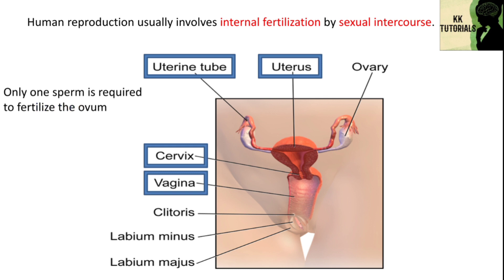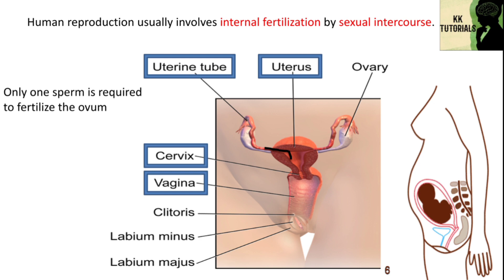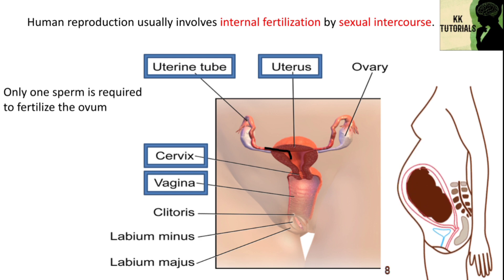Upon successful fertilization, the fertilized ovum or zygote travels out of the fallopian tube and into the uterus, where it implants in the uterine wall. This marks the beginning of gestation, better known as pregnancy, which continues for around 9 months as the fetus develops.